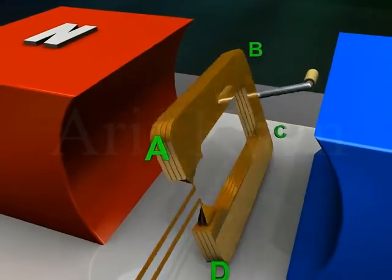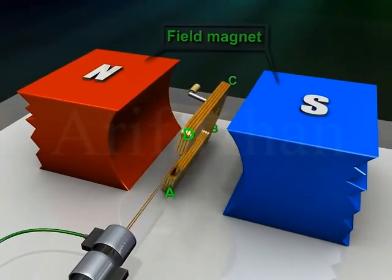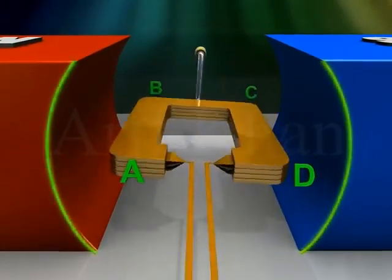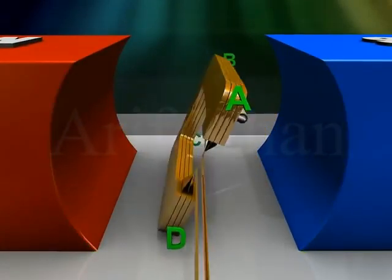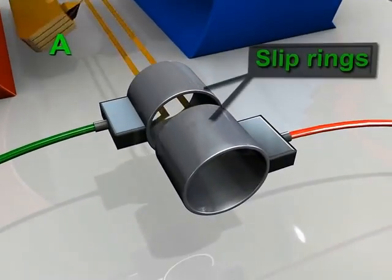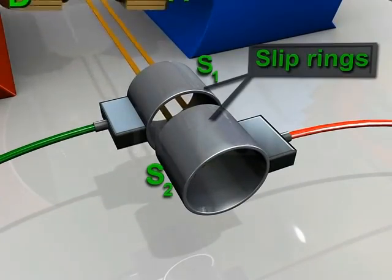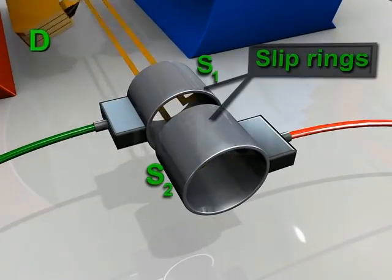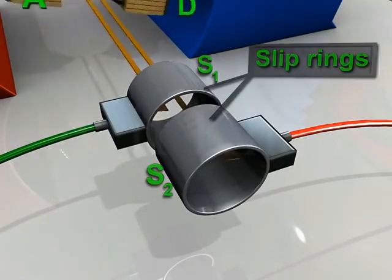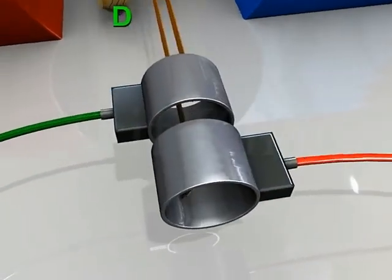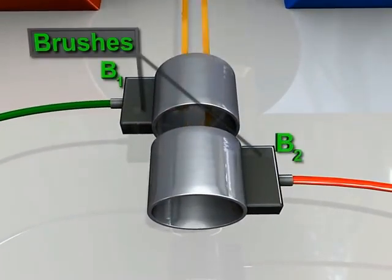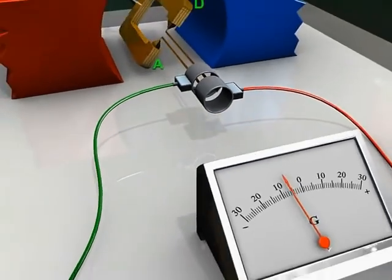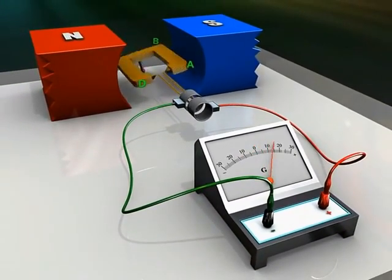A field magnet, which may be a strong permanent magnet with concave poles. Two slip rings S1 and S2, which are connected to the armature and thus rotate with it. Two brushes B1 and B2, which provide electrical contact with the slip rings, and a load.